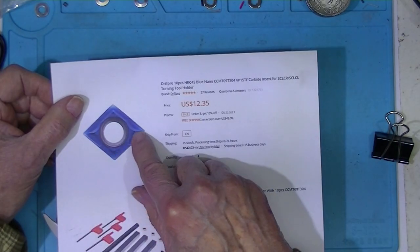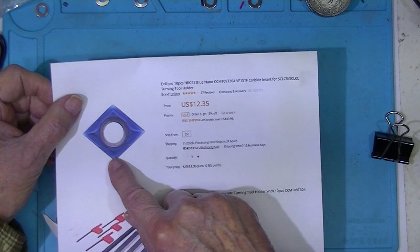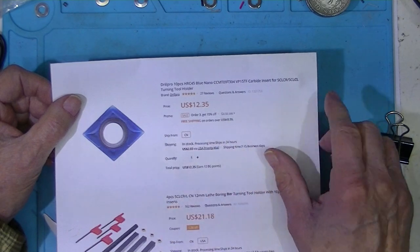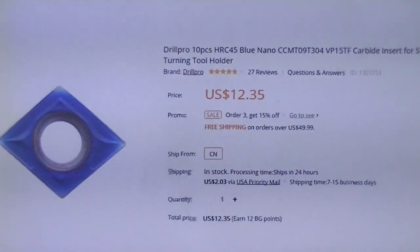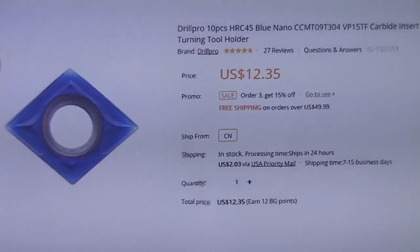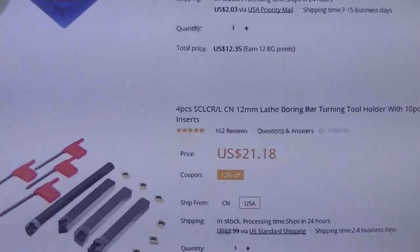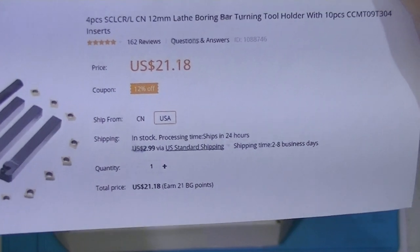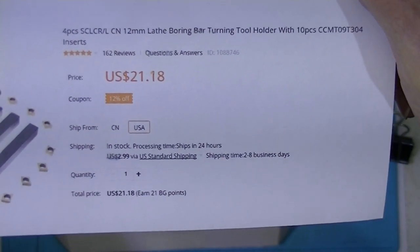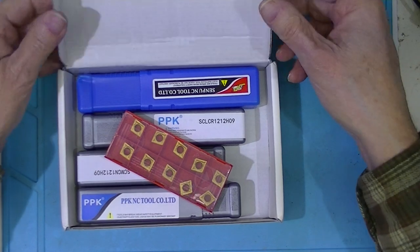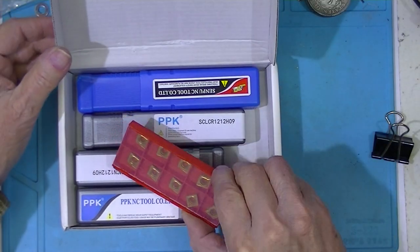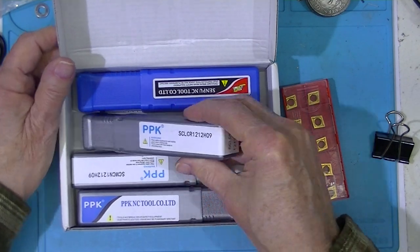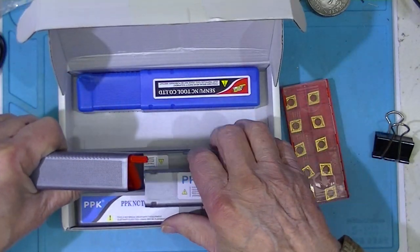I also ordered an additional ten of this blue nano, it's a coating. And as I say they're from Banggood. Again there, all the tooling is shipped in these telescoping plastic containers.